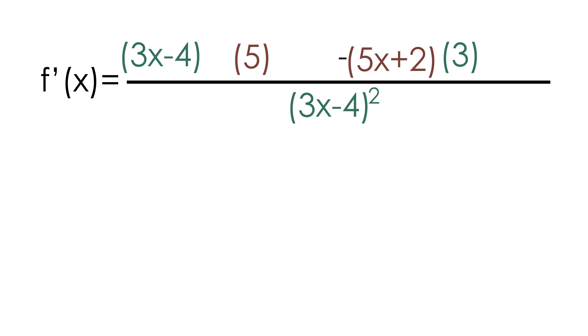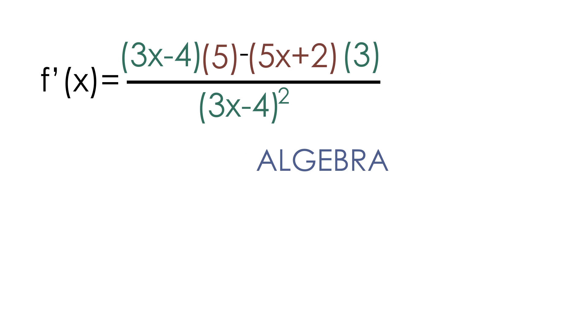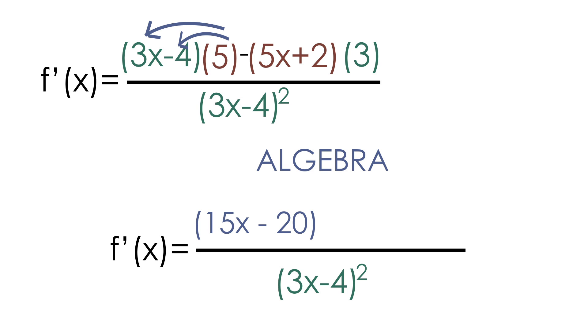So now at this point, we can use some algebra to simplify this even further. We can distribute the 5 with the 3x minus 4. 5 times 3x is equal to 15x, and 5 times negative 4 is equal to negative 20. And we can also distribute the 3 with the 5x plus 2. 3 times 5x is equal to 15x, and 3 times 2 is equal to 6.